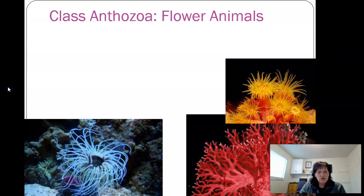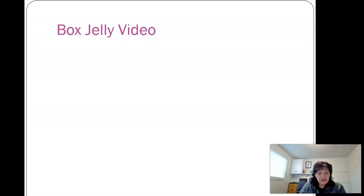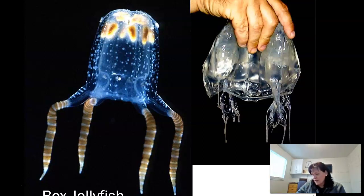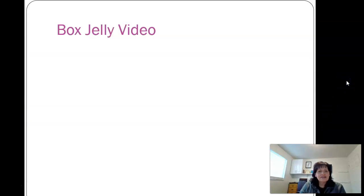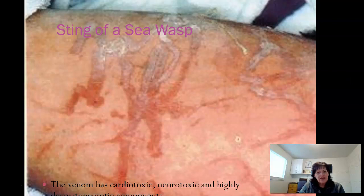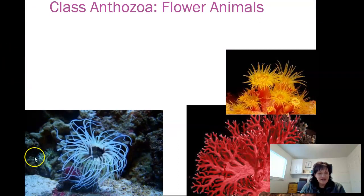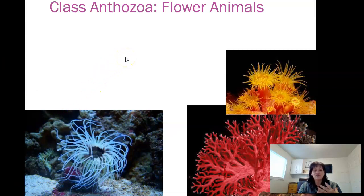Box jelly video — I showed one in class at the beginning. I'll put on a box jelly video for you here as well; that'll be number three. That guy from River Monsters actually picks one up — crazy. Here is the sting of a sea wasp: the venom is cardiotoxic, neurotoxic, and highly dermotoxic. So it will mess with your heart, your nervous system, and your skin if one of those gets you.